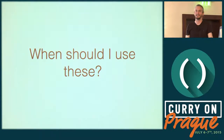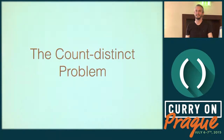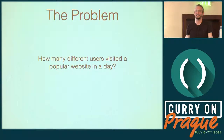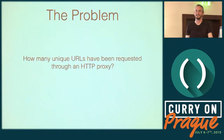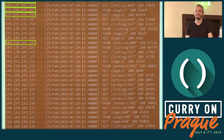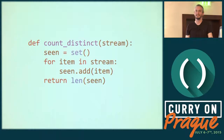So let's look at the first problem we're going to consider: the count distinct problem. It's the problem of counting unique items in a stream that may contain duplicates, or more formally finding the cardinality of a multi-set. Real-world examples include: how many unique words are in a large corpus of text, how many different users visited a popular website, how many unique IPs connected to a server, or how many URLs have been requested through an HTTP proxy. The naive solution is trivial: take a set, add every item in the stream to the set, and the output is the length of the set.